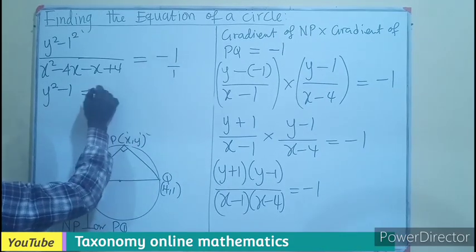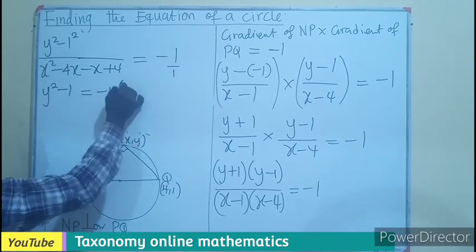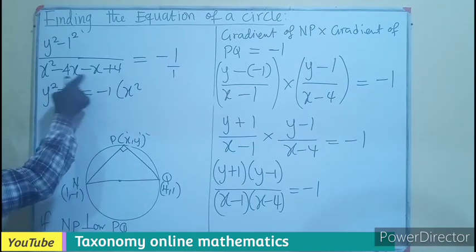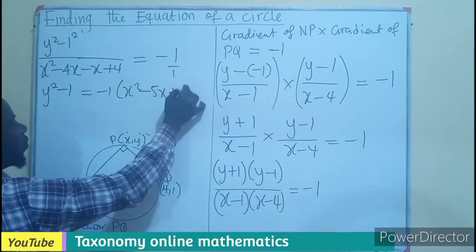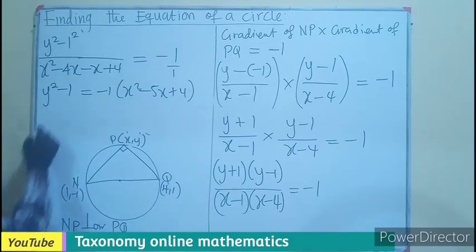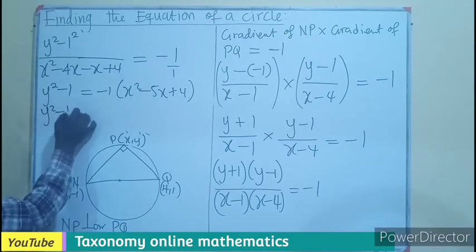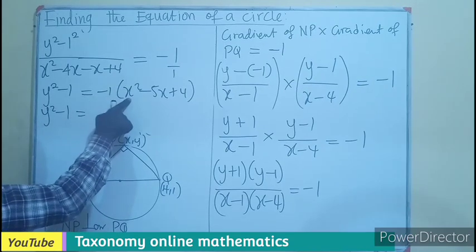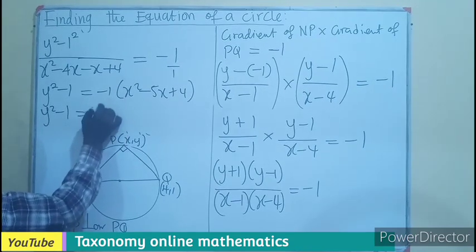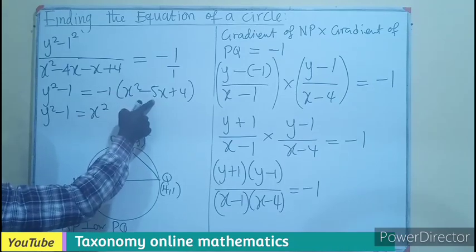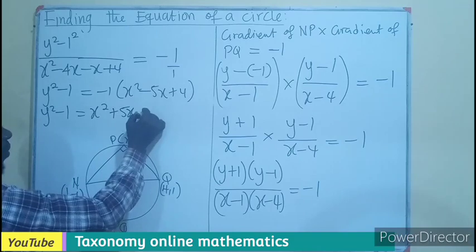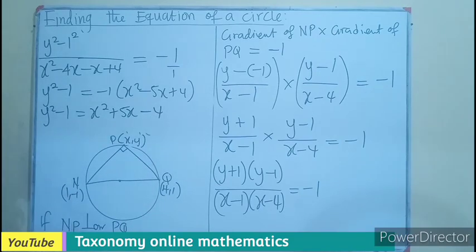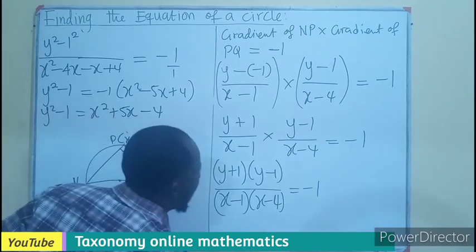Expanding the right side: y² − 1 = −x² + 5x − 4. Now transpose everything to the left to get our general form. Bringing terms across: y² + x² − 5x − 1 + 4 = 0, giving us the negative one becoming part of the constant.